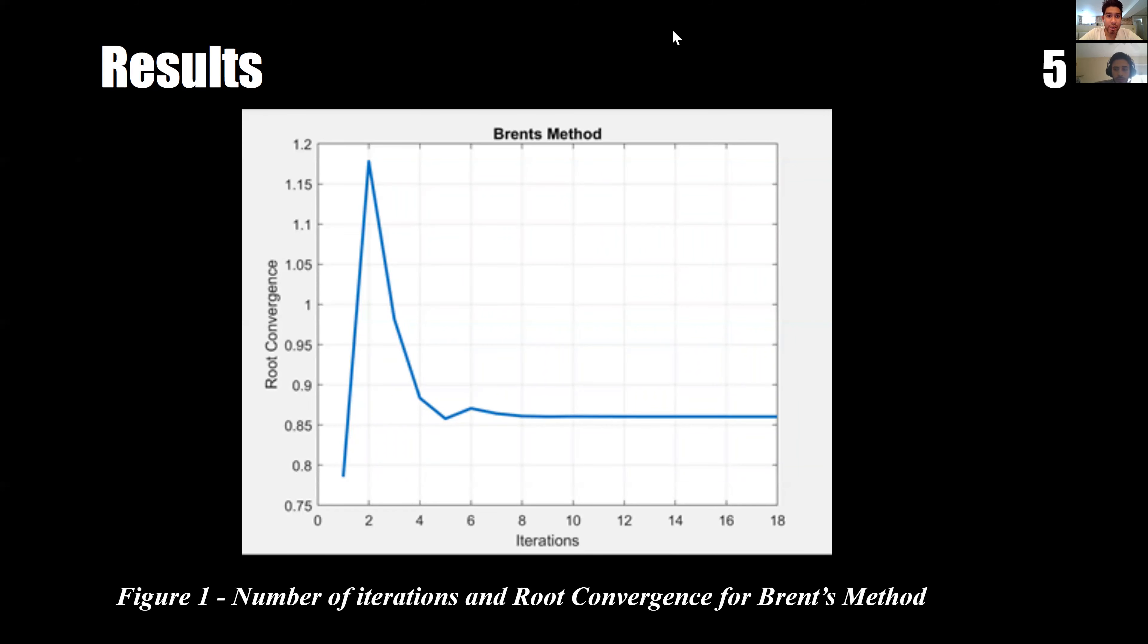Figure one depicts the number of iterations and root convergence for Brent's method. When the number of iterations is small, the root convergence is very irregular since it hasn't reached the actual root value that will solve this particular function. However, as it reaches seven iterations, the value is more consistent with the root value of 0.86033, and it goes all the way until 18 iterations.